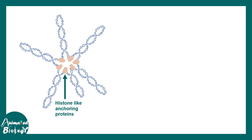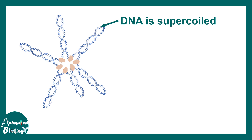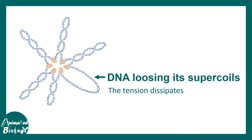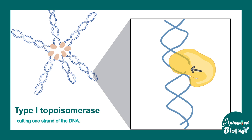There are categories of topoisomerase enzymes which can relieve this stress. Here you can see a bacterial nucleoid — these are the DNA loops, and these DNA loops are supercoiled. Eventually the double helix coils upon itself. If one strand of this double helix is cut, the DNA would loosen up and dissipate the tension. This is done by topoisomerase class enzymes.